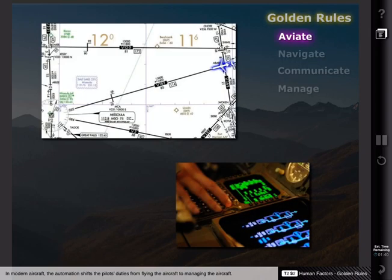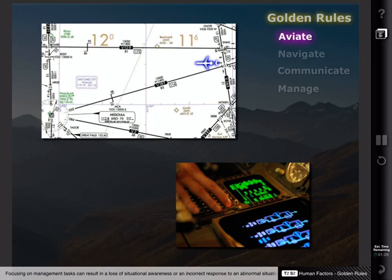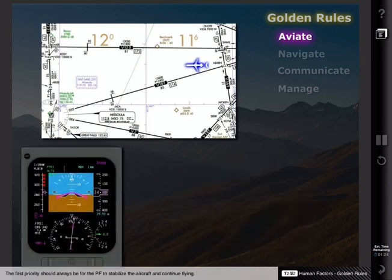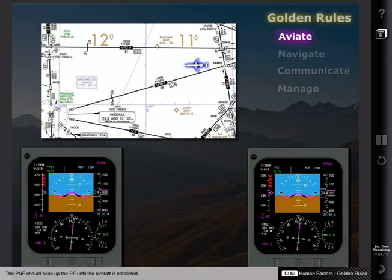In modern aircraft, the automation shifts the pilot's duties from flying the aircraft to managing the aircraft. Focusing on management tasks can result in a loss of situational awareness or an incorrect response to an abnormal situation. The first priority should always be for the pilot-flying to stabilize the aircraft and continue flying. The pilot-not-flying should back up the pilot-flying until the aircraft is stabilized.